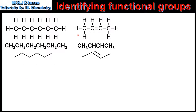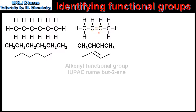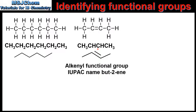The next example is a compound containing carbon and hydrogen atoms only. However, looking at the full structural formula we can see a double bond between two carbon atoms, therefore this molecule contains an alkenyl group. In the condensed structural formula, the two carbon atoms at either end are bonded to three hydrogen atoms, while the two carbon atoms joined by the double covalent bond are only bonded to one hydrogen atom. In the skeletal formula we can see the carbon-to-carbon double bond in the structure.